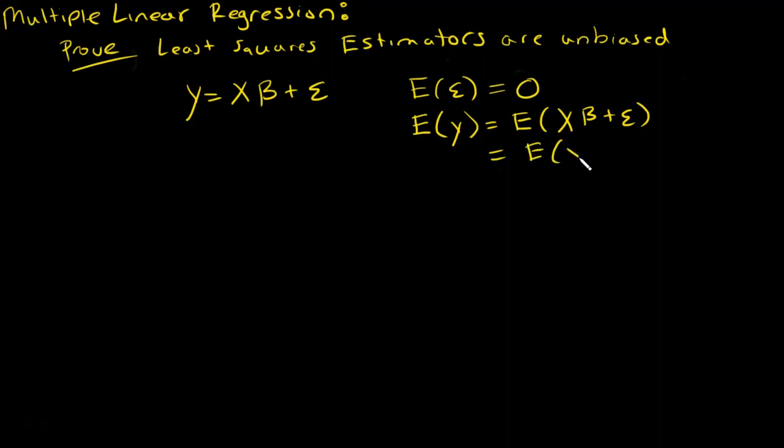then we know that the expected value of y would be the expected value of x times beta plus epsilon, which is the expected value of x times beta plus the expected value of epsilon. Now this is just a constant, so it's just itself. We're also assuming x is non-random, so this is the constant plus zero by the model assumption. So we have the expected value of y is x times beta.